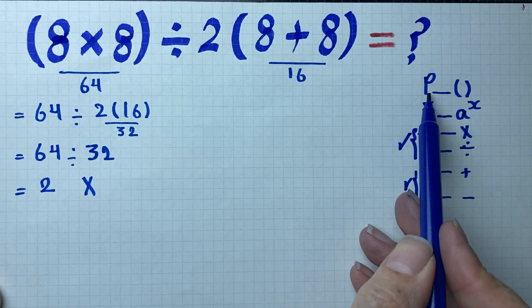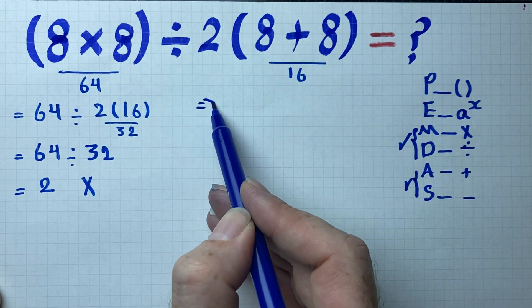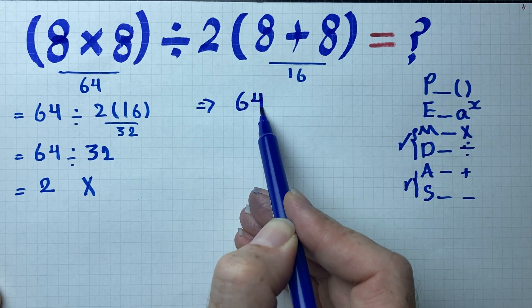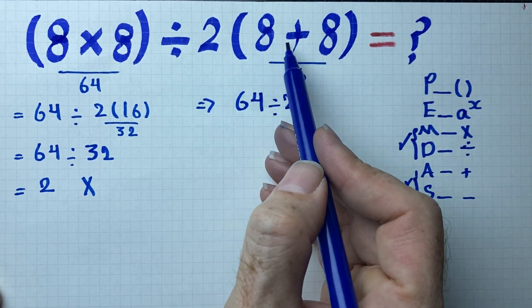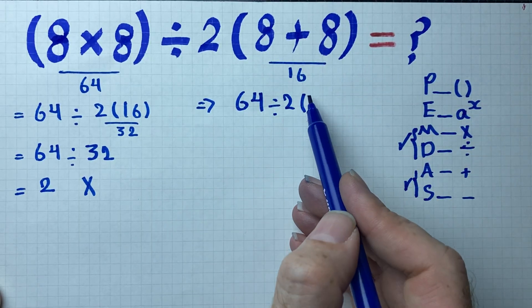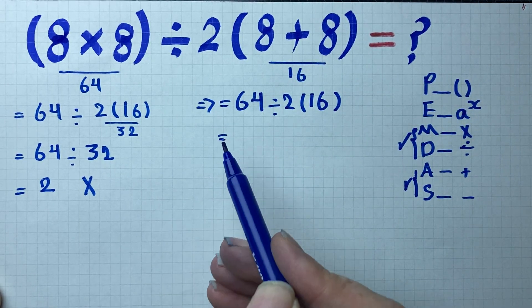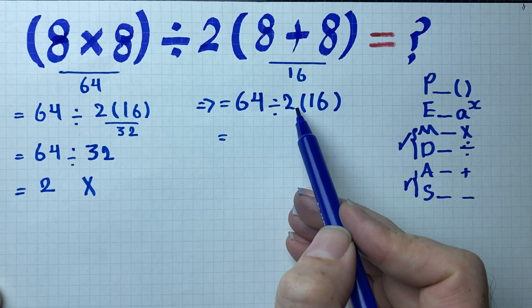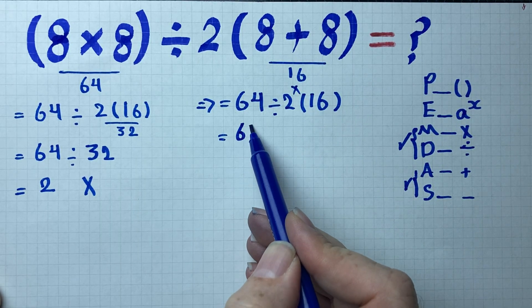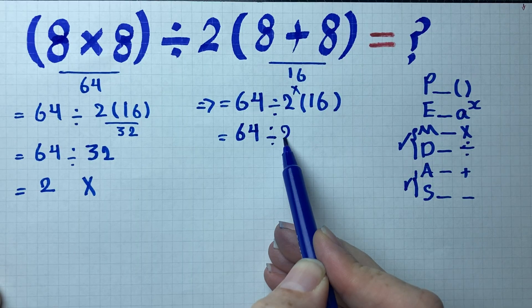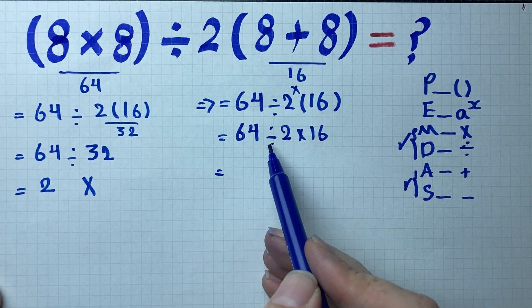Now we are going to find the value of this expression using PEMDAS. First, parentheses: 8 times 8 is 64, and 8 plus 8 inside the parenthesis is 16. So we have 64 divided by 2 times 16. Remember, the number next to a parenthesis implies multiplication, so it is 64 divided by 2 times 16.